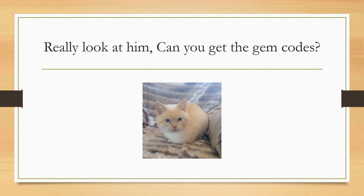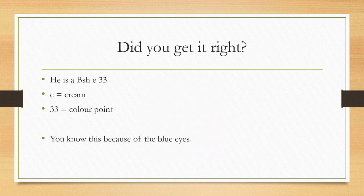This is my ginger nut — look at him really carefully. Can you get the gem codes right? Ginger nut is a colour point. The eyes gave it away — the eyes are blue. So he is BSH because he is a British Shorthair, E because he holds cream, and 33 because he is a colour point.